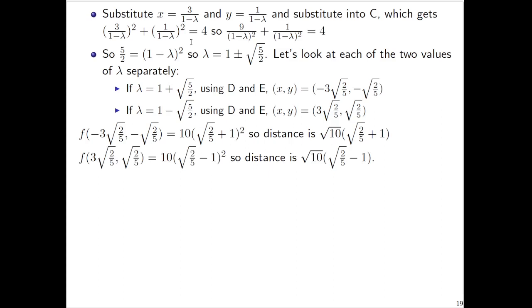We can do the same with the other combo of x,y values that we got. We get the f value to be 10(√(2/5) - 1)². That number square rooted is the distance. So in other words, √10(√(2/5) - 1).